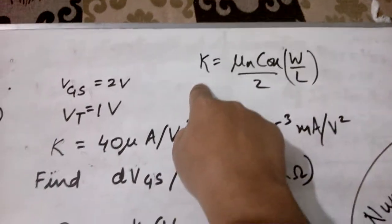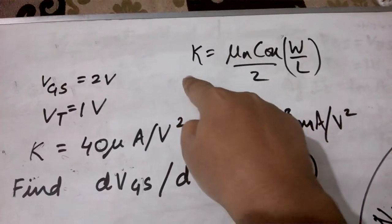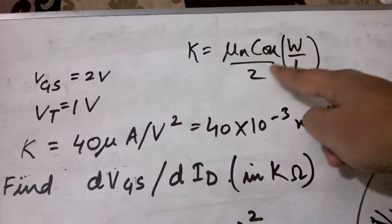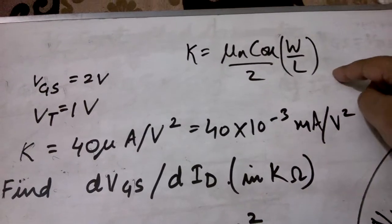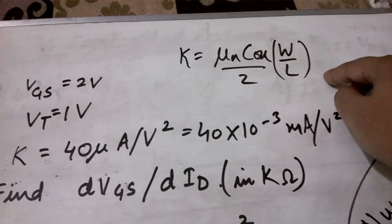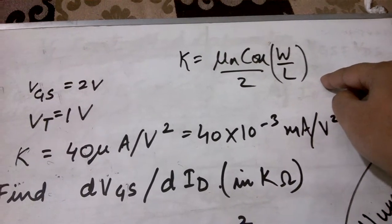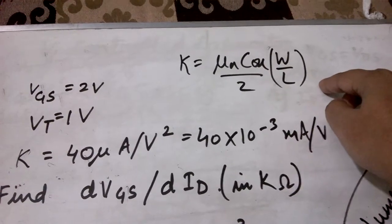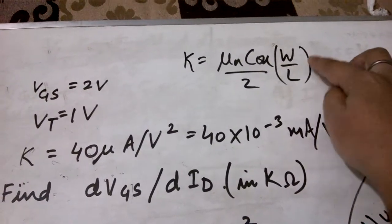K is basically μn·Cox/2·(W/L), where μn is the mobility of electrons for N-channel MOSFET, Cox is the oxide capacitance, and W and L are respectively the width and length of the channel.